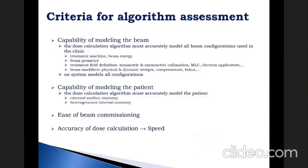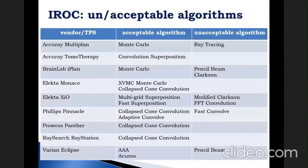Important criteria include the algorithm's capability to accurately model all beam configurations using the linac, accurately model the patient with respect to external surface anatomy and heterogeneous internal anatomy, ease of commissioning, and speed without sacrificing accuracy. The Imaging Radiation and Radiation Oncology Core reviewed algorithms available in current treatment planning systems and categorized them as acceptable and unacceptable.